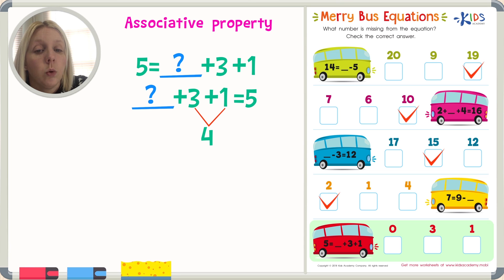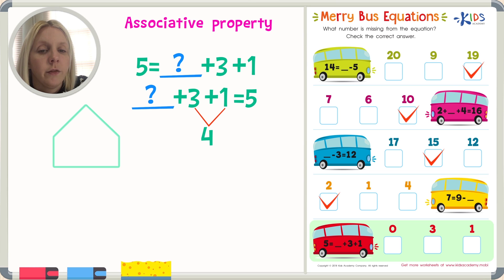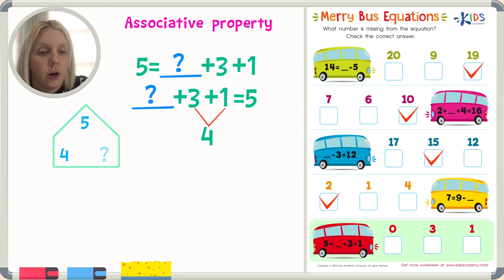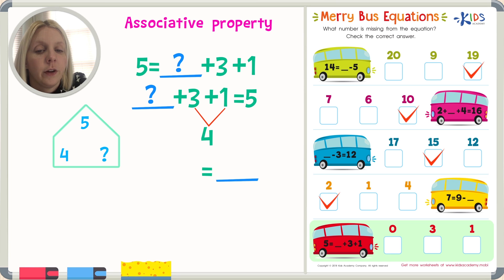Something plus four equals five. Let's draw our little house and see where everything goes. I've got five and four. It's an addition problem, so five — my biggest number — will be on top of the house, and I've got four. I need to figure out what the other number is. So I take something plus four equals five. I need that something off by itself, which means I do a subtraction problem starting with five: five minus four equals what?